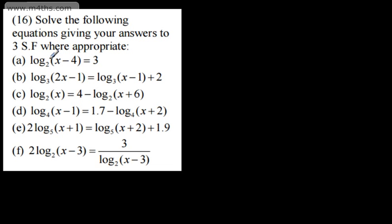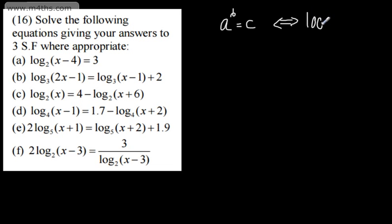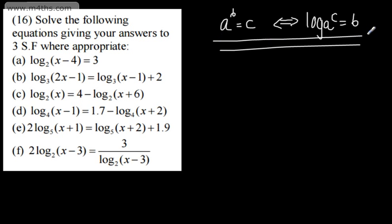In part A, we've got log to the base 2 of x minus 4 is equal to 3. All I'm going to do to solve this is rewrite this in exponential form. We saw in the first video that if we have A to the power of B is equal to C, this is the exponential statement, we can write the equivalent logarithmic statement as log to the base A of C is equal to B. If that doesn't mean anything to you, go back and check out video 1.